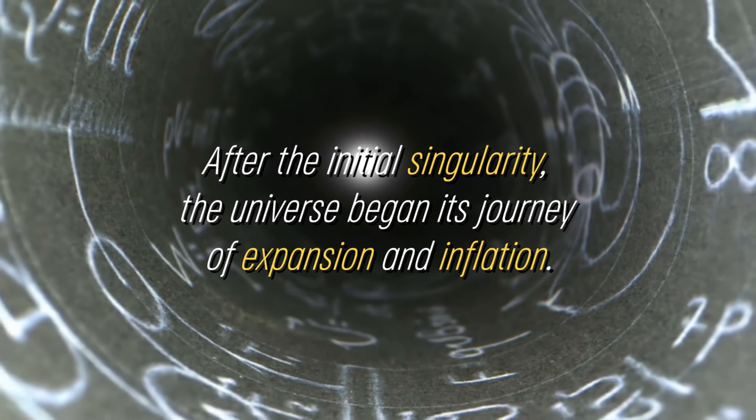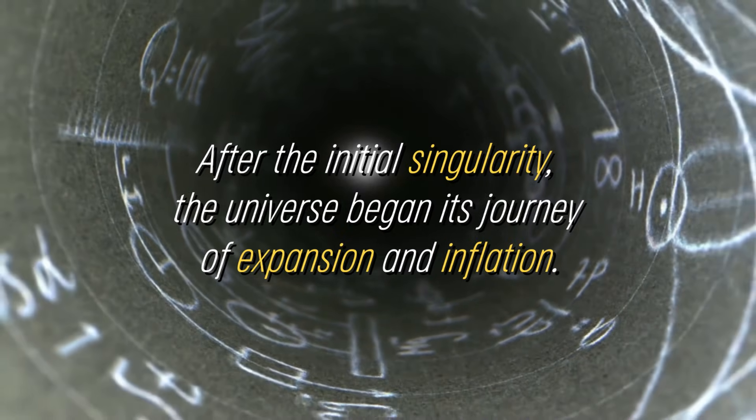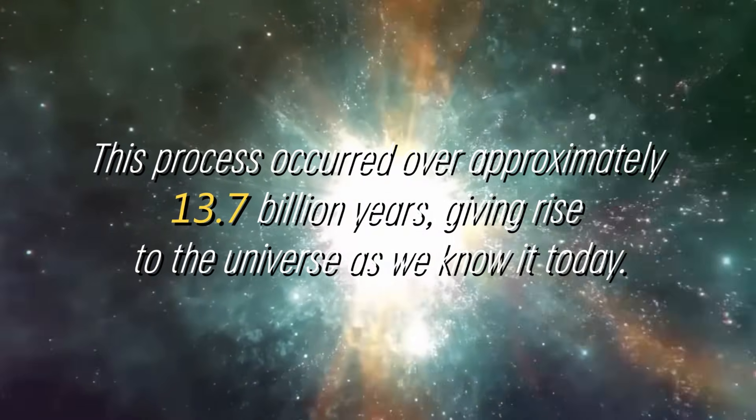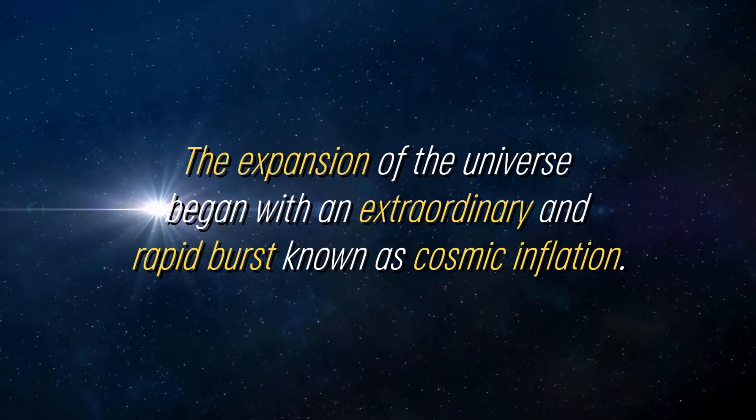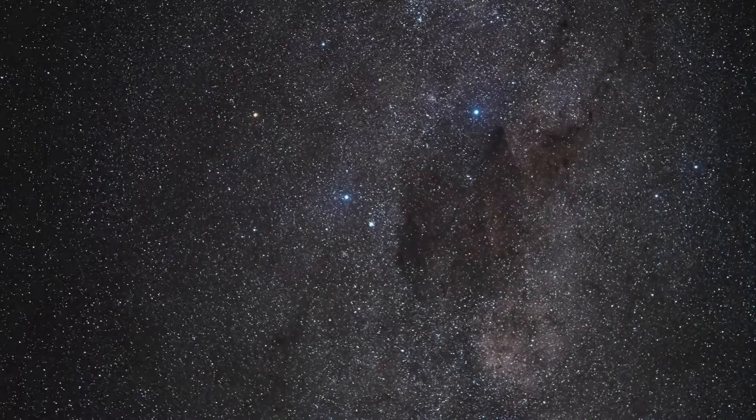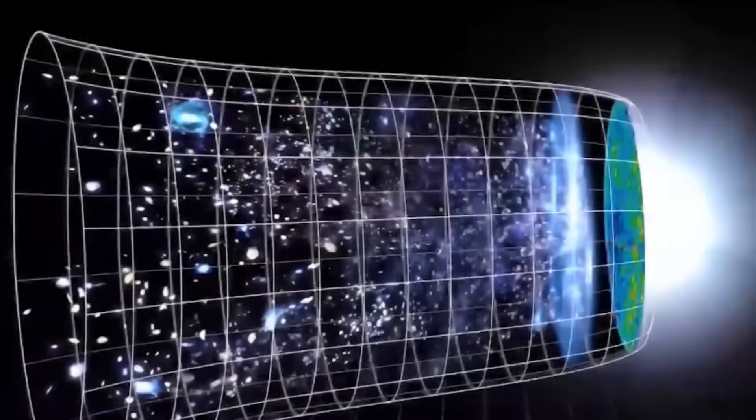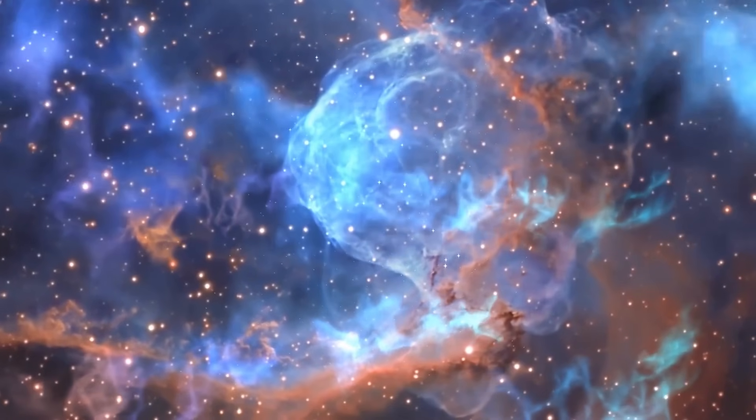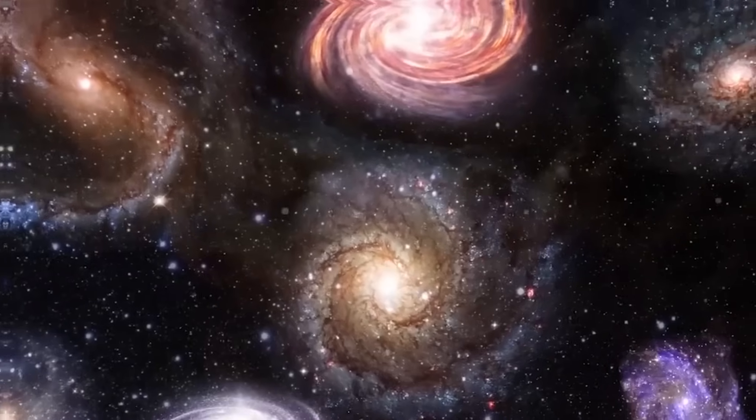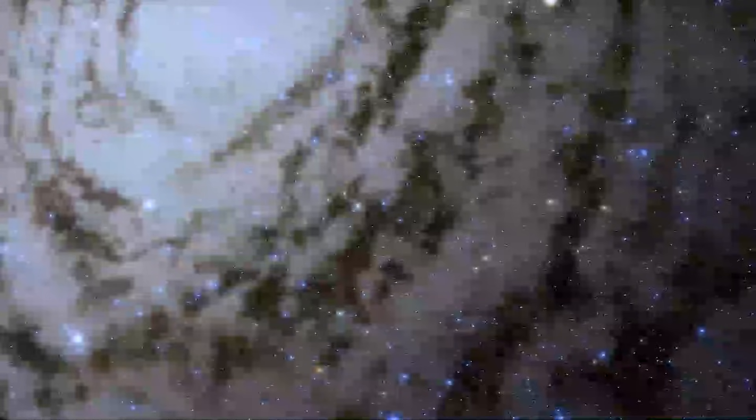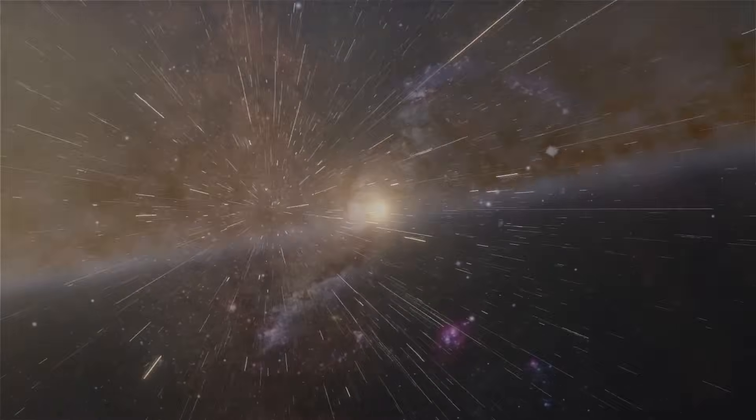After the initial singularity, the universe began its journey of expansion and inflation. This process occurred over approximately 13.7 billion years, giving rise to the universe as we know it today. The expansion of the universe began with an extraordinary and rapid burst known as cosmic inflation. During this phase, the universe expanded at an unimaginable speed, far exceeding the speed of light. It is as if the very fabric of space stretched and stretched, pulling everything within it with it. Cosmic inflation played a massive role in the formation of the large-scale structure of the universe. It smoothed out irregularities, homogenized the distribution of matter and energy, and paved the way for the subsequent formation of galaxies, stars, and other cosmic structures.